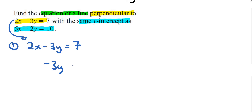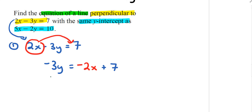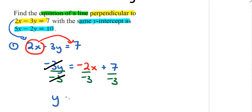Moving 2x to the other side gives negative 2x plus 7, then dividing both sides by negative 3. After simplifying, y equals positive 2 over 3x minus 7 over 3.